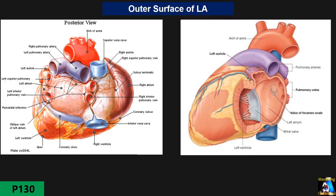Here we have a superior-posterior view of the left atrium and base of the heart. The upper border of the left atrium is limited by the pulmonary artery trunk, left and right pulmonary arteries. The inferior border is the atrioventricular groove, where the coronary sinus passes. The lateral border is the great vein, and on the right lateral border we have the IVC, SVC, intra-atrial septum, and fossa ovalis.